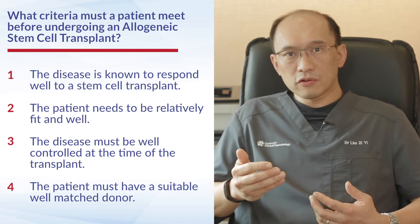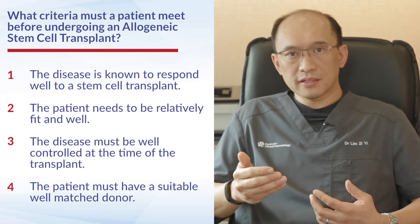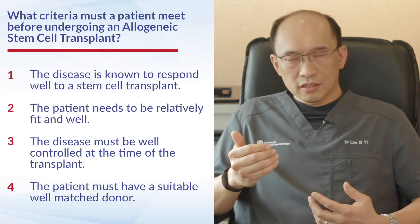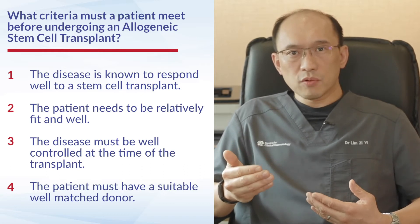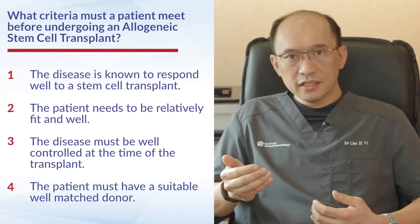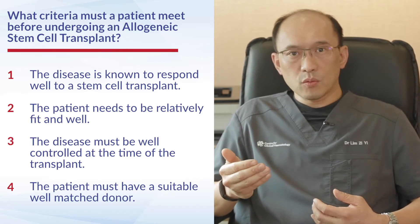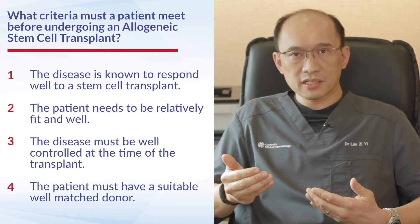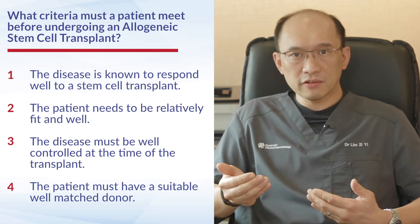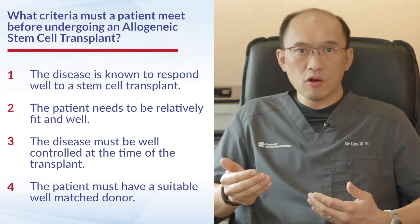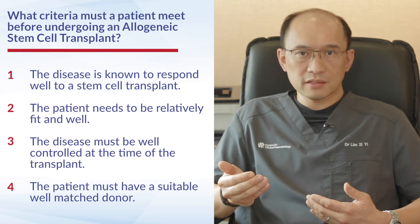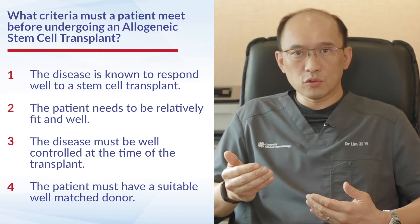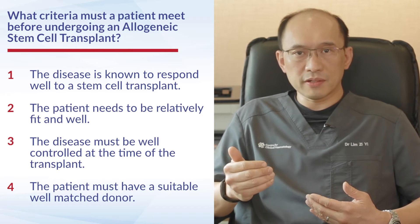For a patient to be suitable for an allogeneic stem cell transplant, they must meet several criteria. First, the disease must be a type that will respond well to the transplant. Second, the patient needs to be fit and well, as this is a higher-risk procedure with certain physical fitness requirements. Third, the disease must be well controlled at the time of transplant, and the patient must have a suitable, well-matched donor.